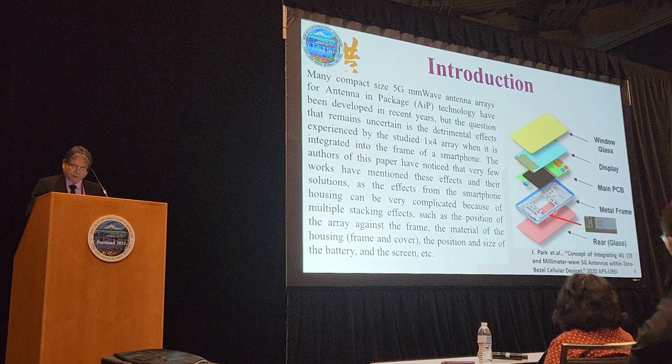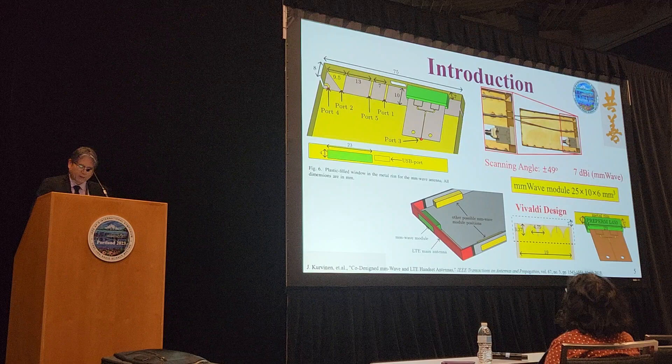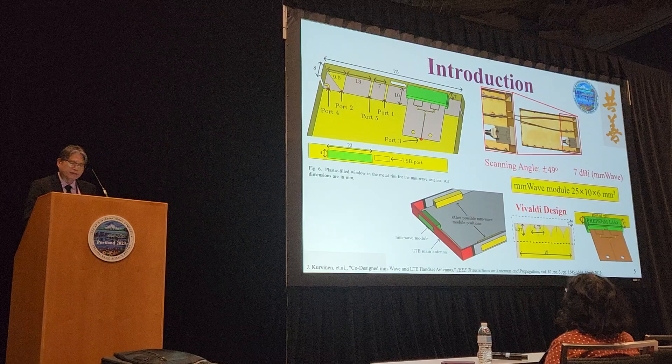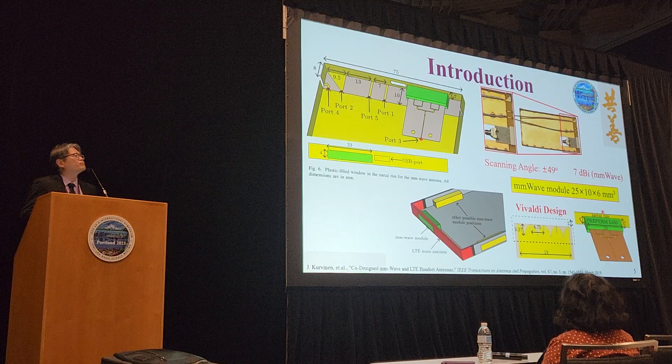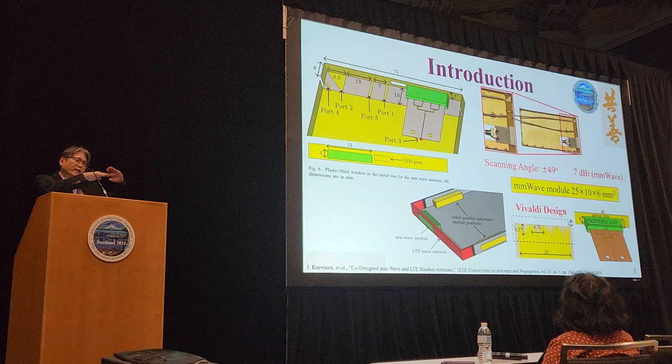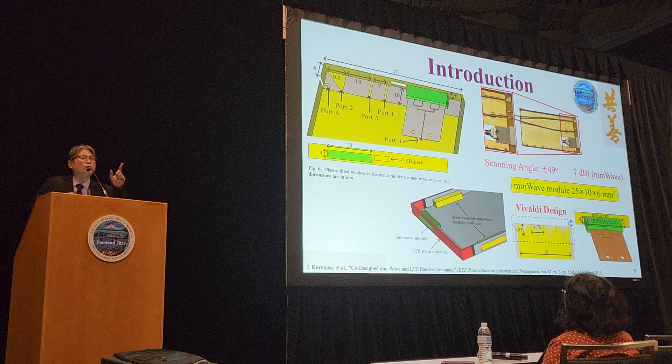Looking at some papers published back in 2019, you can see they tried to cut a window, and in this design they use a Vivaldi design, then try to cover it using some kind of plastic. But the authors of this paper don't discuss the effects after putting the Vivaldi antenna and trying to cover it with green plastic. In fact, it will affect the radiation pattern, as we'll see later on.